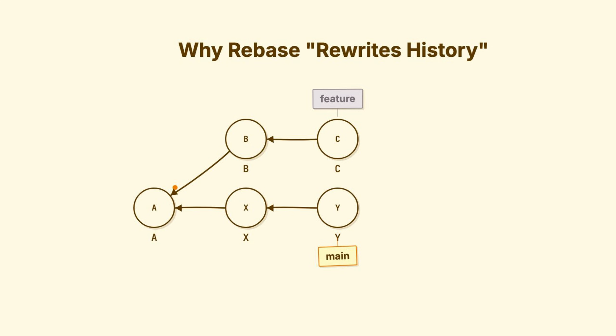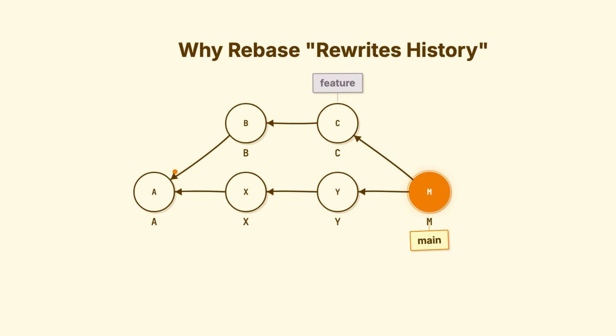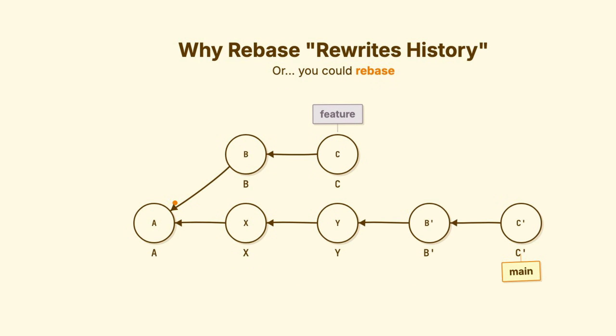You have two options to integrate. Option one: merge — create a merge commit with two parents. History shows the truth: two parallel lines of work that join together. Option two: rebase.